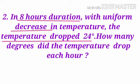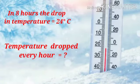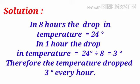In 8 hours with uniform temperature change, the temperature dropped 24 degrees. How many degrees did the temperature drop each hour? The drop per hour is the total drop divided by the number of hours: 24 divided by 8 gives 3. So the temperature dropped 3 degrees per hour.